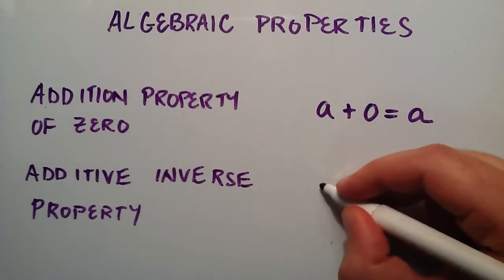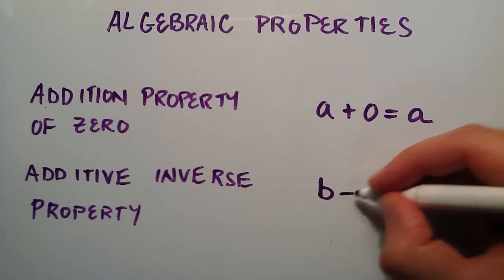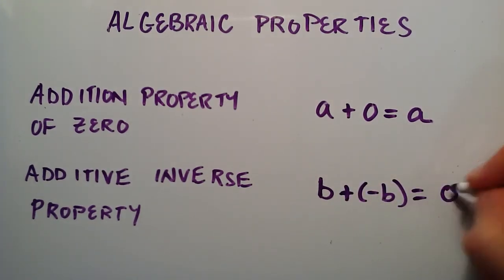So the second property, if we have some number b, we'll call it, and we subtract or basically add a negative b, then that equals zero.